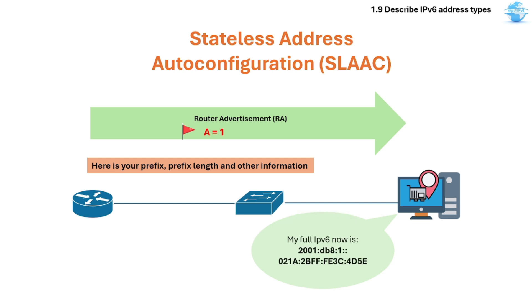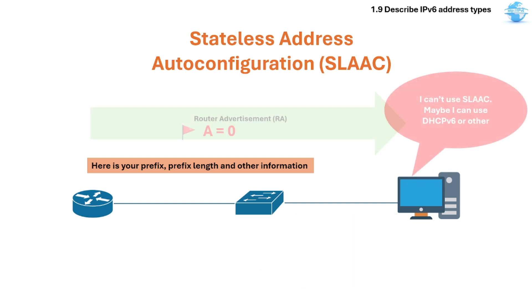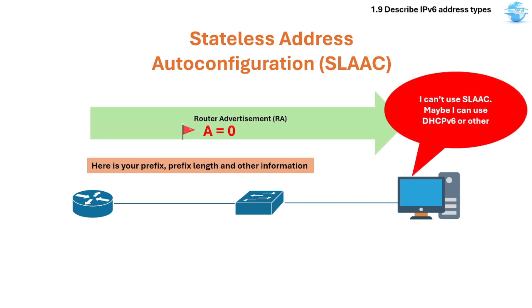The full IPv6 address is generated from the prefix provided by the router and the modified EUI-64. If the A flag is 0, SLAAC is not allowed, and the host may have to use DHCPv6 or other means to get an address.